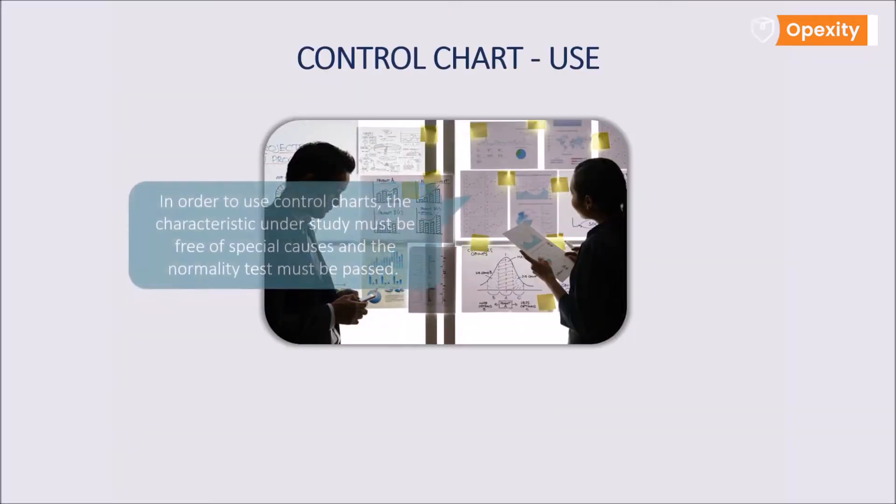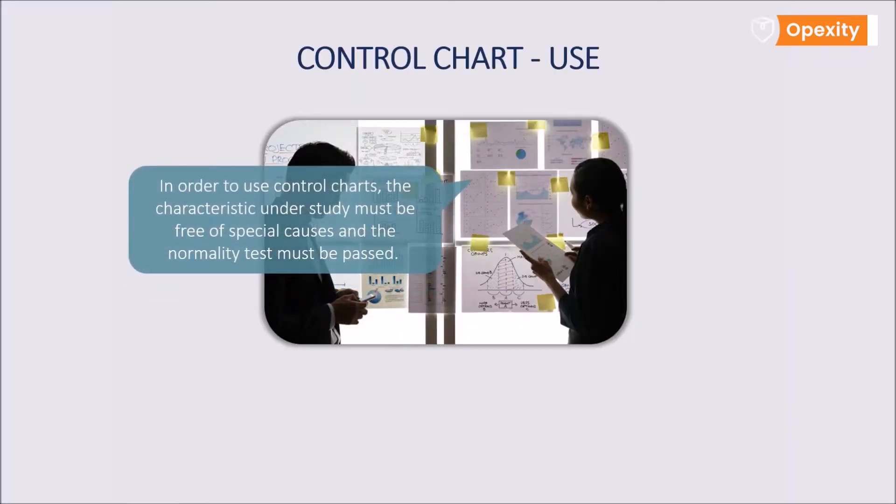It should be pointed out that the selected process and characteristic, the parameter that will be monitored, must first fulfill the conditions necessary for the use of the control chart. The characteristic under examination must be free of special causes, and the normality test for statistical analysis must be passed.